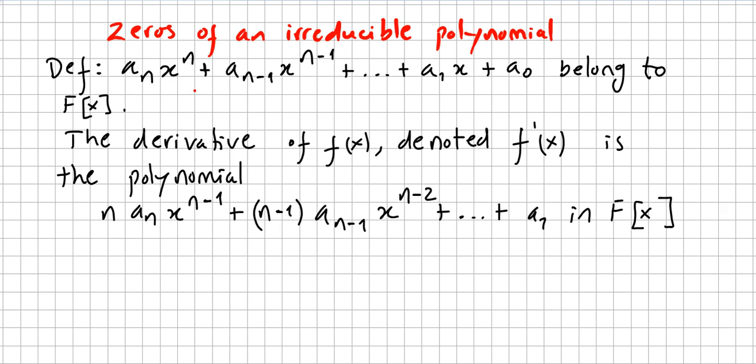We pick this polynomial that belongs to the ring of polynomials: a_n x^n + a_{n-1} x^{n-1} + ... + a_1 x + a_0. This is a polynomial in the ring of polynomials.